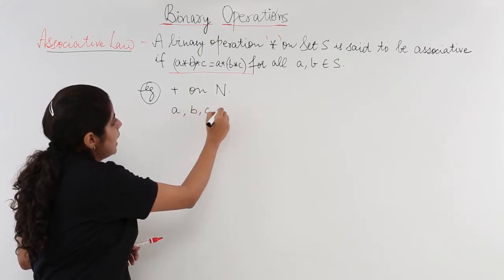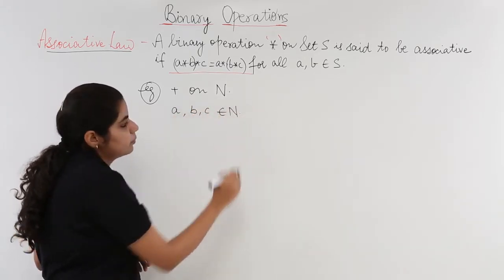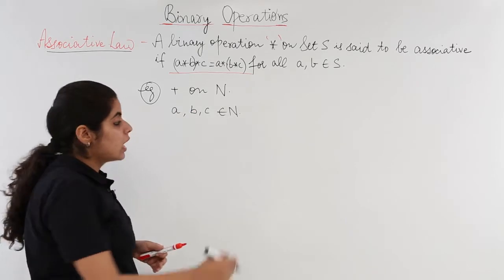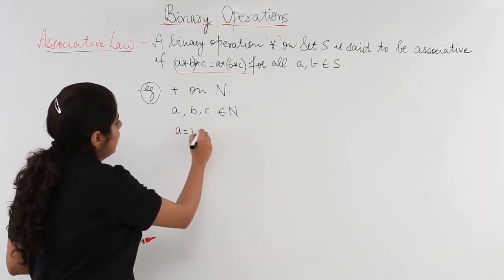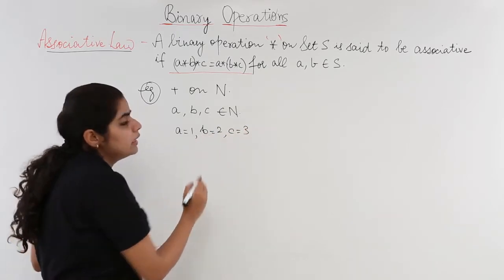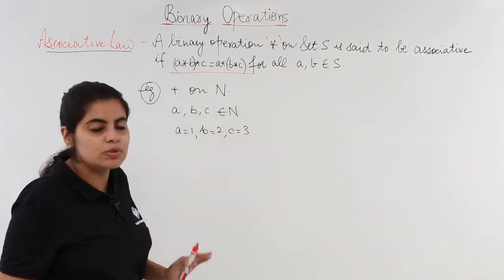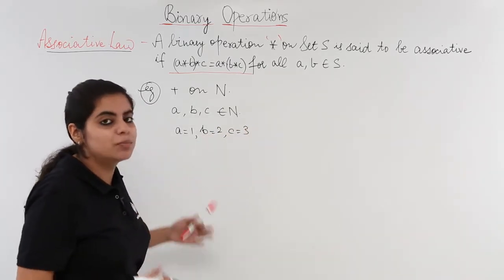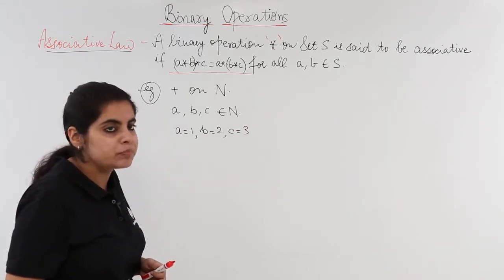So I have plus, addition on N, on natural numbers, and I have to check whether the addition operation on natural numbers is associative or not. Let's see what will be the case. I have A, B, C again, and these all belong to natural numbers. Suppose A equals 1, B equals 2, C equals 3. Different elements can have different values. I am just taking a simpler example for the sake of it.